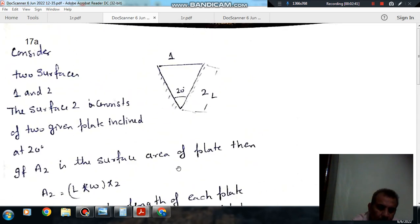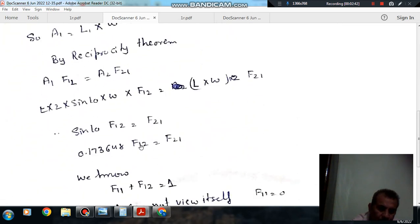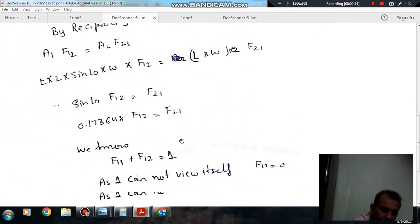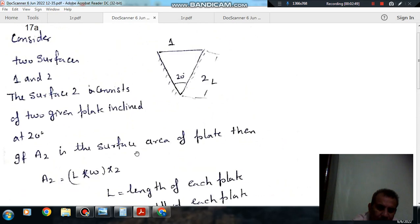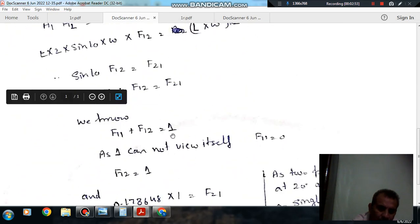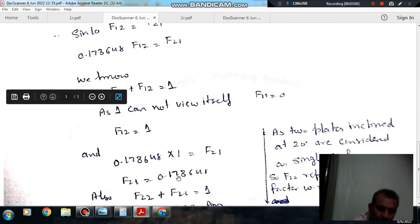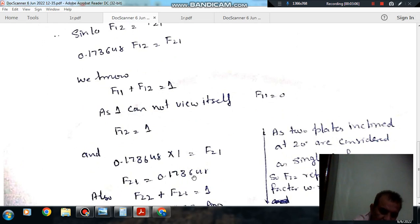Now we have the relationship between F12 and F21, and we know that F11 plus F12 equals 1. This plate cannot see itself, so this will be 0, so F12 will be 1. Now we can put the value of F12 here and find out F21. So F21 comes out as 0.173648.